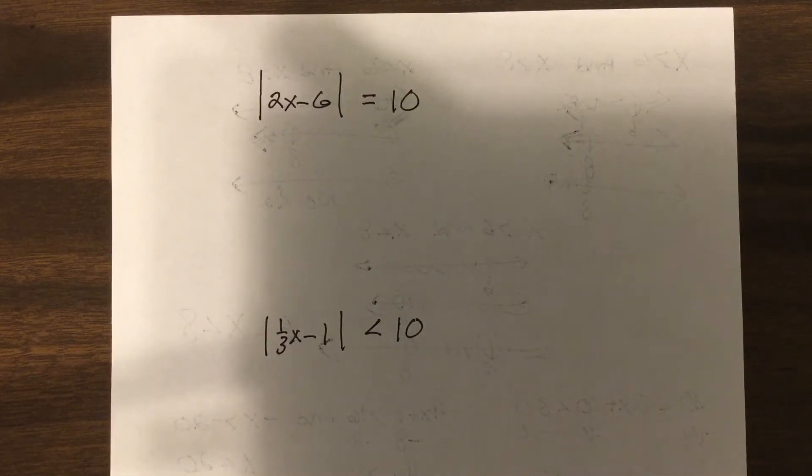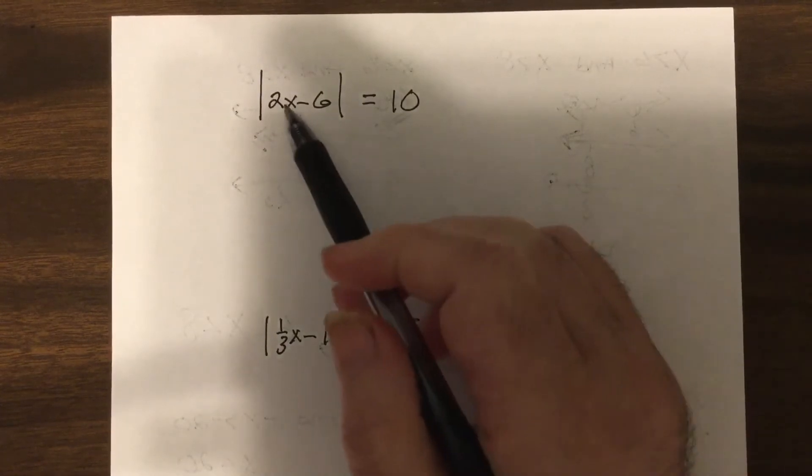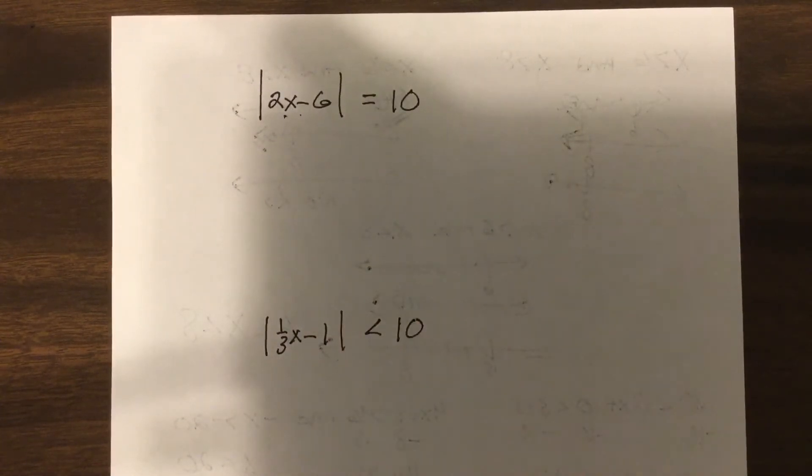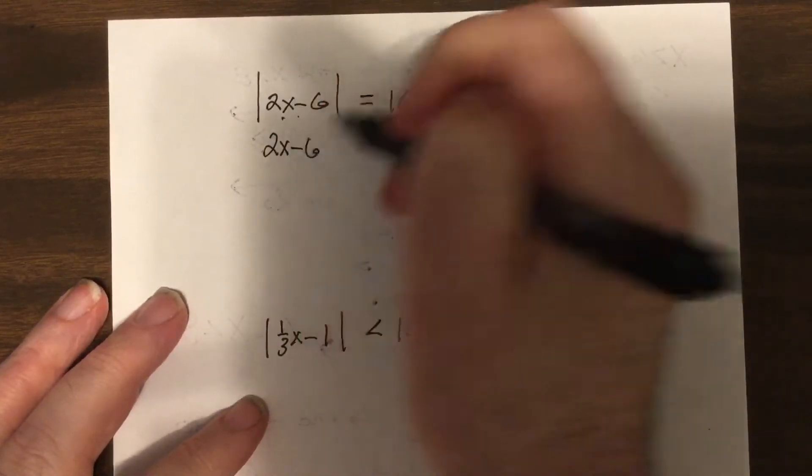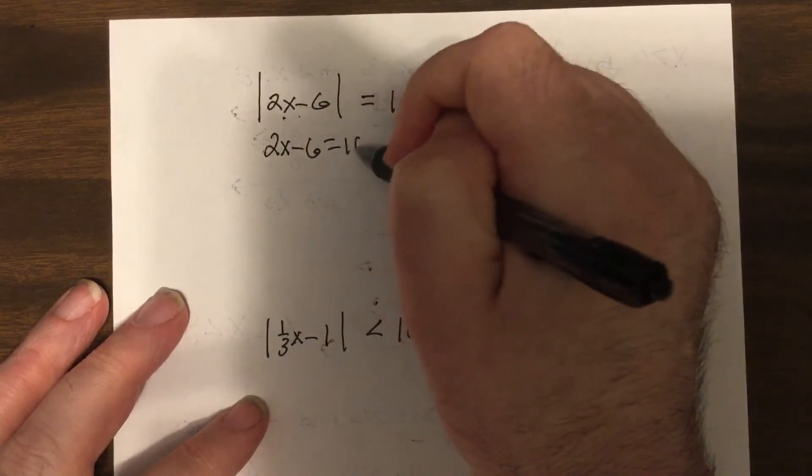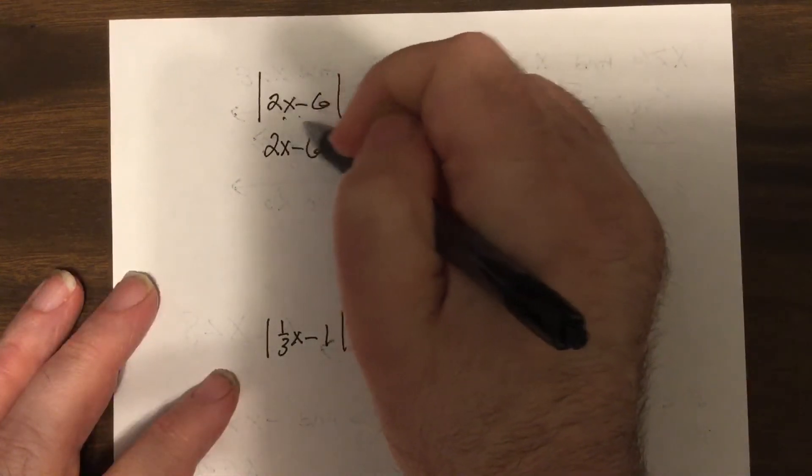Okay, absolute value. When absolute value has a variable inside of it, it has to be broken up into two parts. So you would start off by saying 2x minus 6 equals 10, so you take care of the case